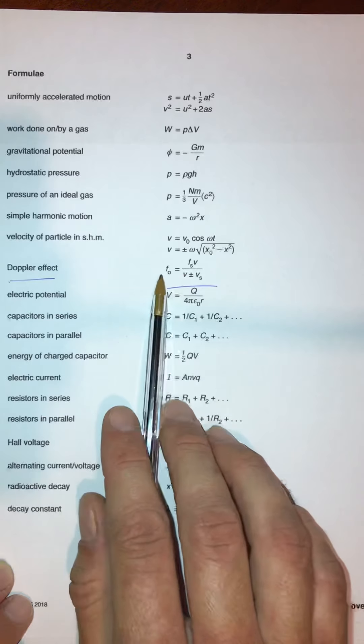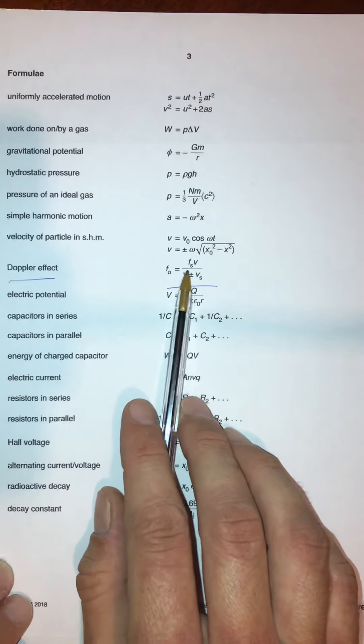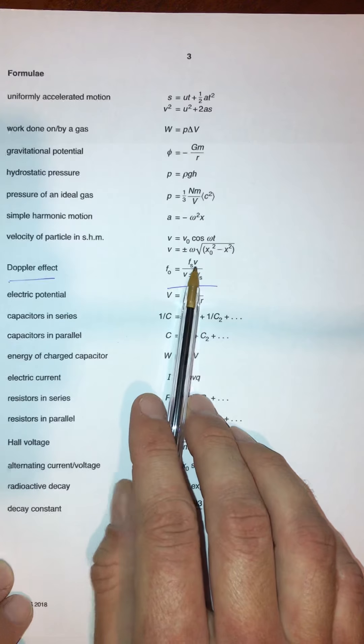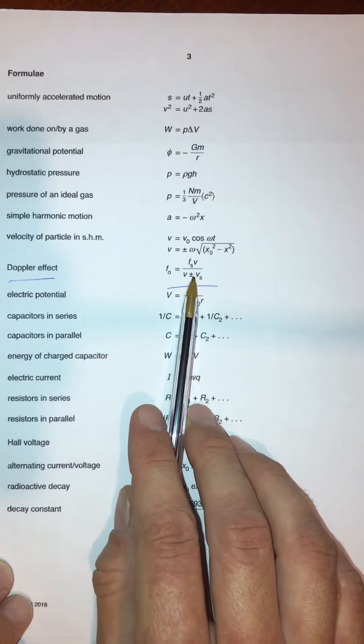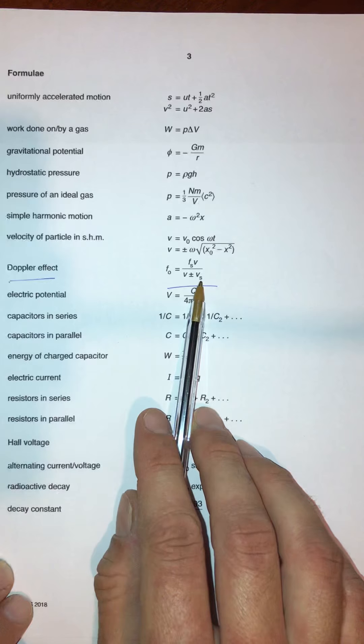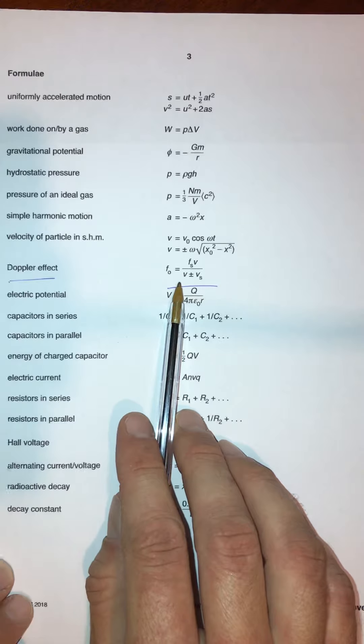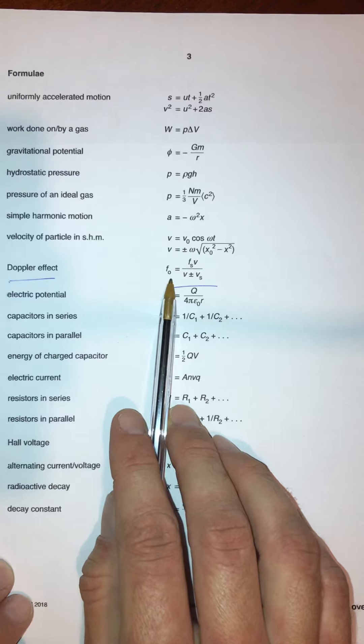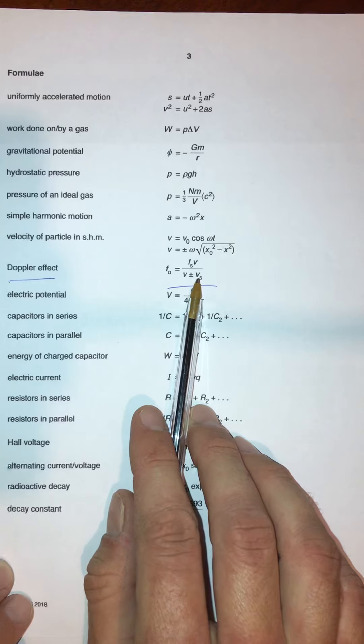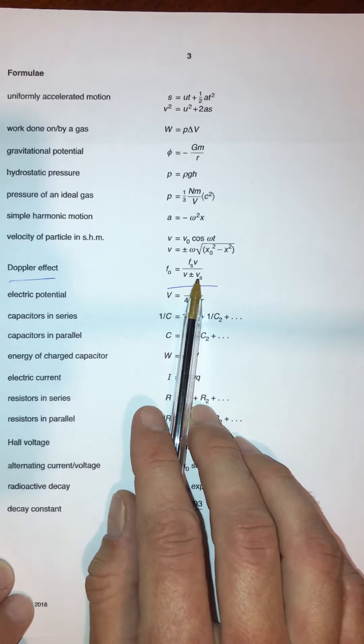So, knowing that the observed frequency is equal to the frequency of the source times the velocity of the wave, divided by the velocity of the wave plus or minus the velocity of the source, we can calculate how the frequency changes based on the relative motion of the source of a wave.